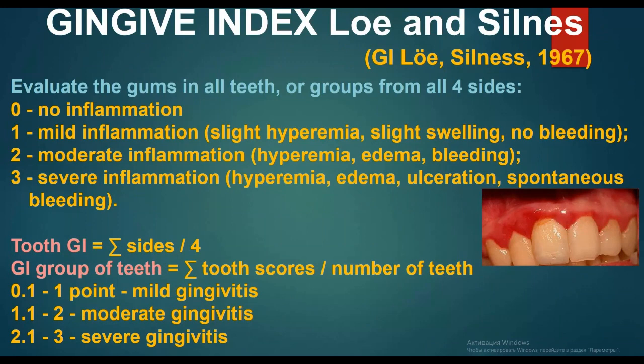Gingival Index (GI) by Löe and Silness, 1967: overlay the gums in all teeth or groups from all four sides. Grade 0: no inflammation. Grade 1: mild inflammation — slight hyperemia, slight swelling, no bleeding. Grade 2: moderate inflammation — hyperemia, edema, bleeding. Grade 3: severe inflammation — hyperemia, edema, ulceration, spontaneous bleeding.